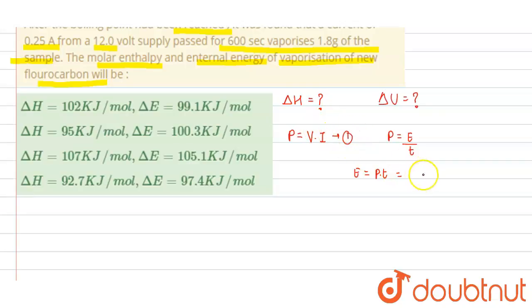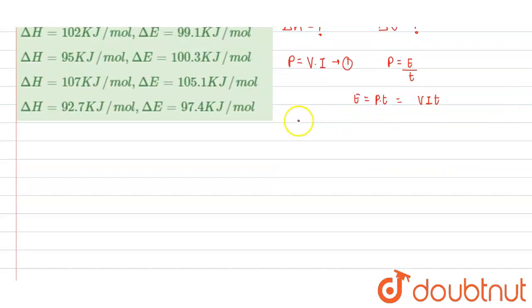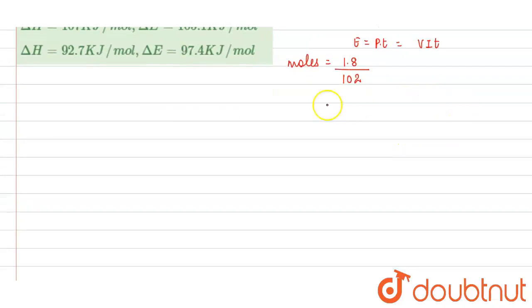For per mole, moles of fluorocarbon is given mass of the fluorocarbon that is vaporized, 1.8, upon total molecular mass that is 102. This will be the number of moles. So energy